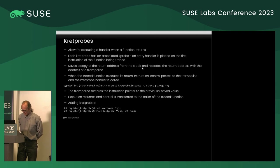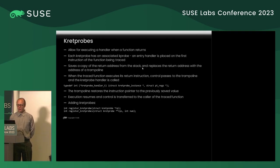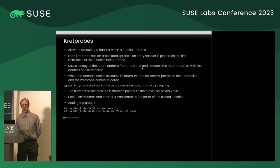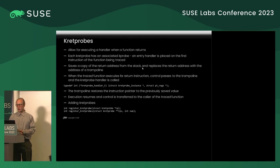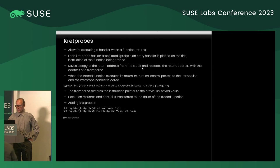Kretprobes are registered for a function as a whole. Each kretprobe has an entry handler — which ftrace's debugfs interface does not allow you to use usefully, but in a debugging module you can. Kretprobes manipulate the function's code to store the return address, use a trampoline, and execute the kretprobe handler upon returning from the function. The interface to register a kretprobe is very similar to the kprobe interface — it's simple, it's nice, it works.